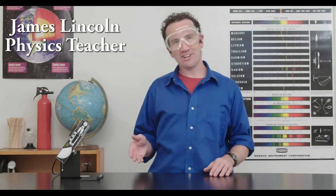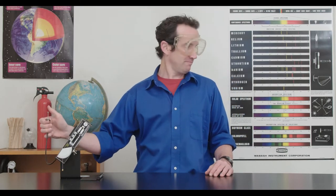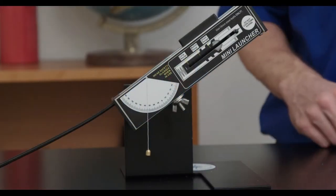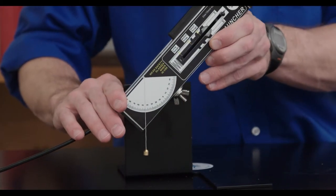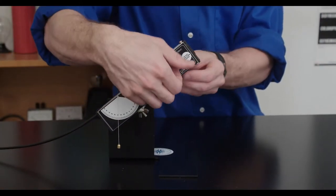This mini projectile launcher allows you to investigate projectile motion in a controlled environment. It has a built-in protractor so you can easily determine the angle of launch, and there are three different launch velocity settings you can choose from.